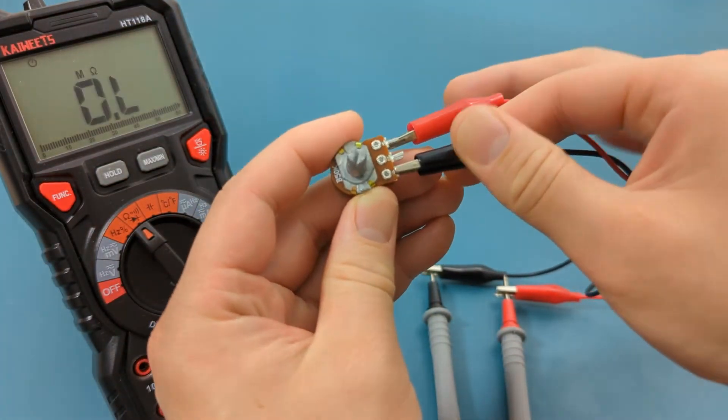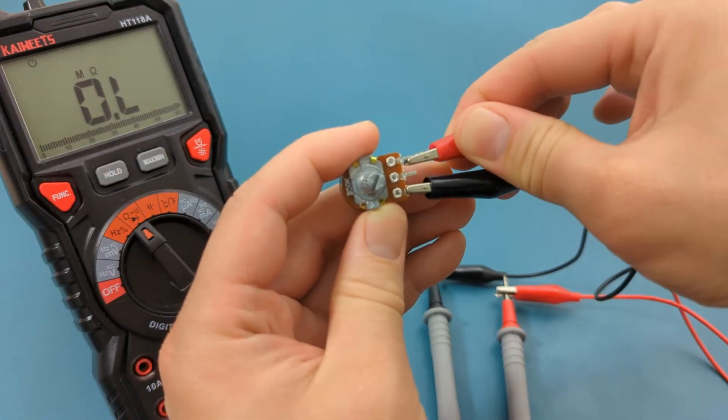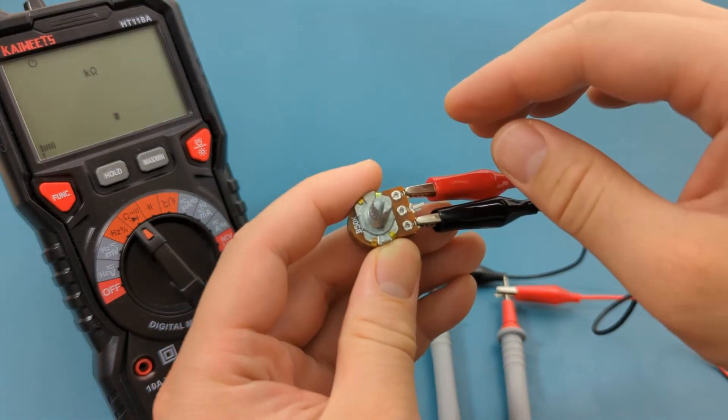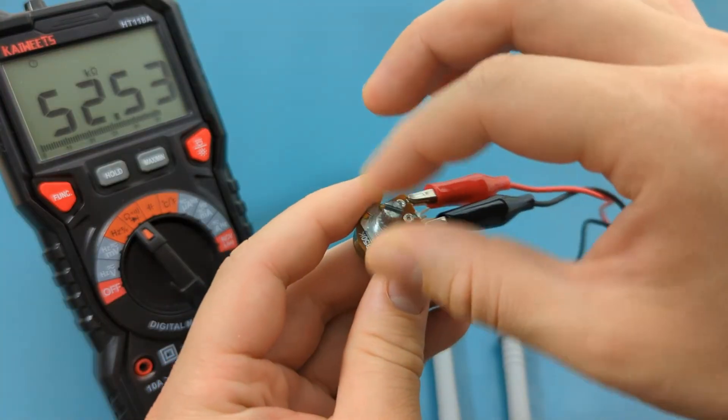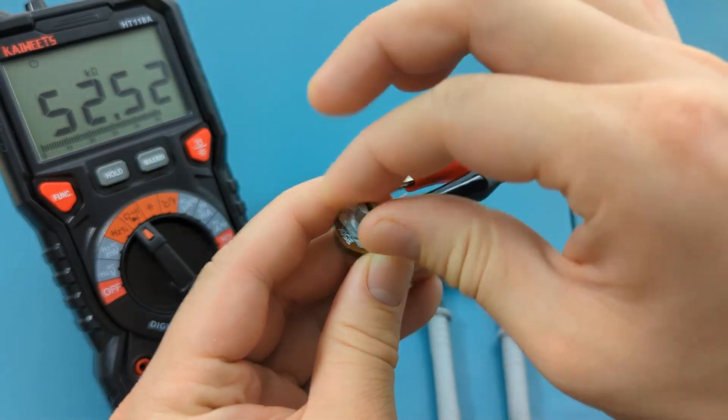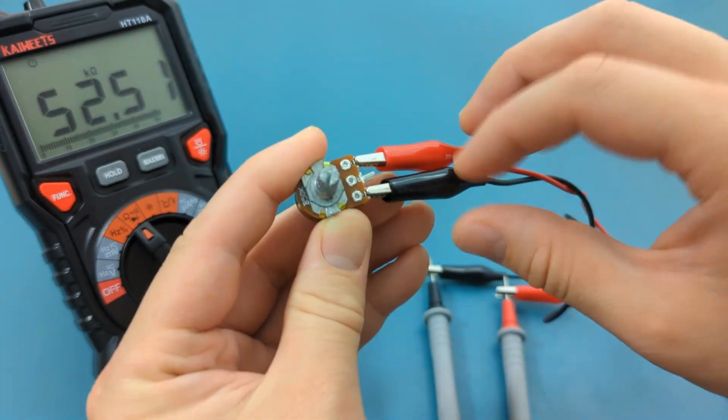Let's see if the top three pins are good. Move the alligator clips from the bottom to the top pins. As before, the maximum resistance is shown since the alligator clips are connected to the fixed terminals.